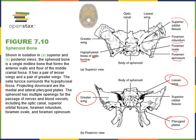The optic canal is located medial to the superior orbital fissure and contains the optic nerve — the nerve that carries the sense of vision from the eye into the brain.